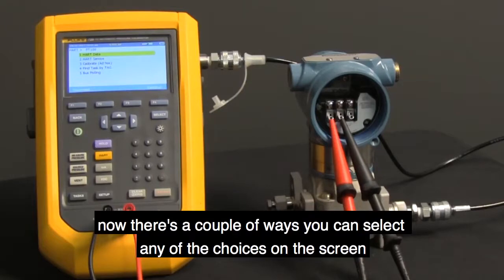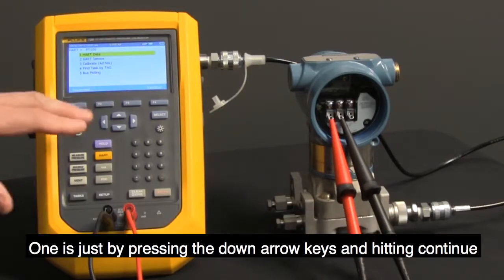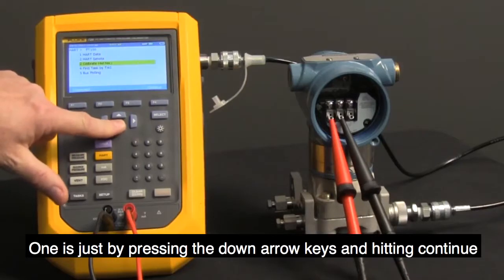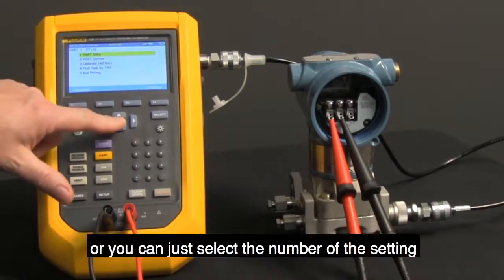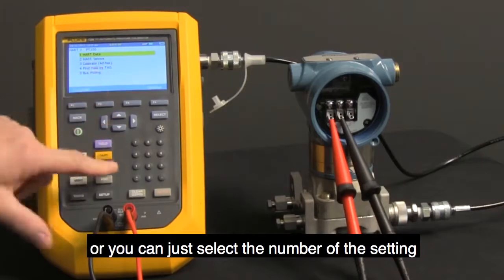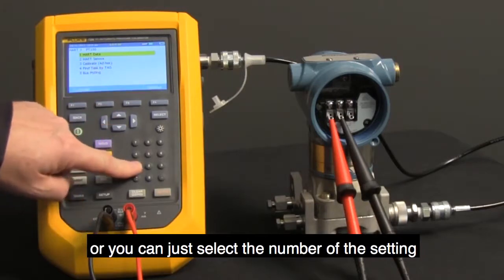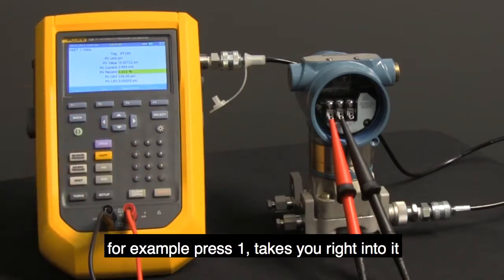Now, there's a couple ways you can select any of the choices on the screen. One is just by pressing the down arrow keys and hitting continue, or you can just select the number of the setting. For example, press 1 takes you right into it.